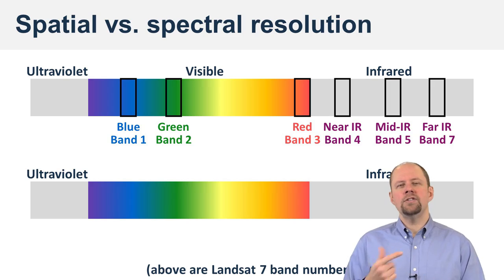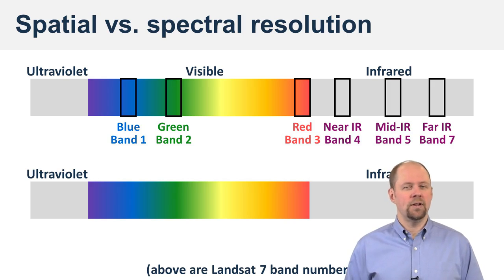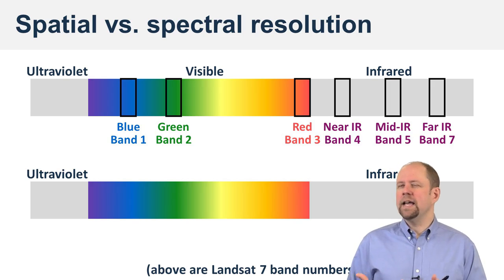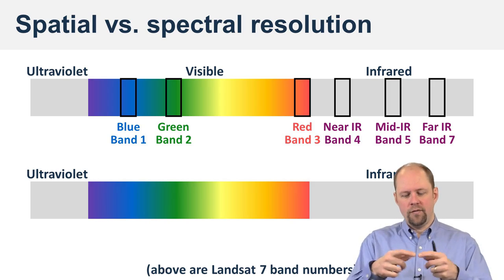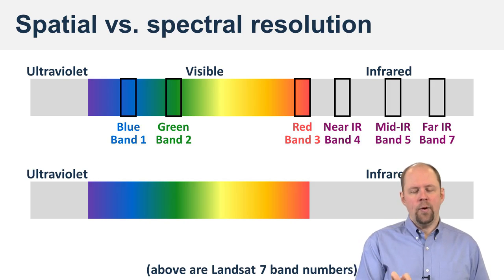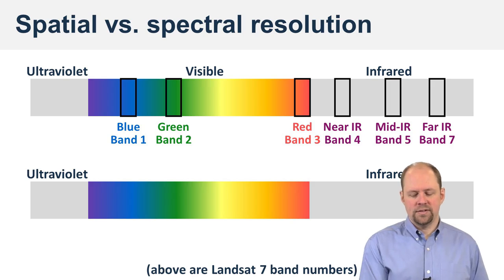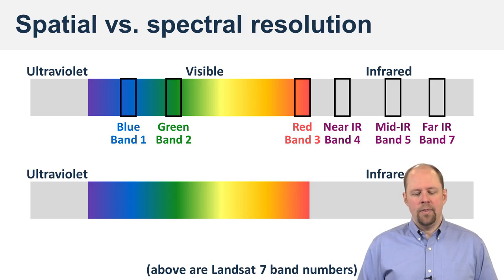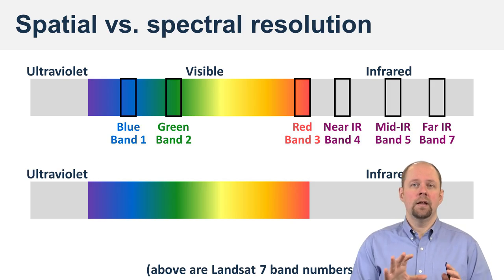There's a relationship I want you to be aware of between spectral resolution and spatial resolution. Think about the amount of light that's being reflected off of a square of land on the ground. So if we have a certain spectral resolution like this, we have six different bands — fairly narrow bands — and the spatial resolution of that would be 30 meters.